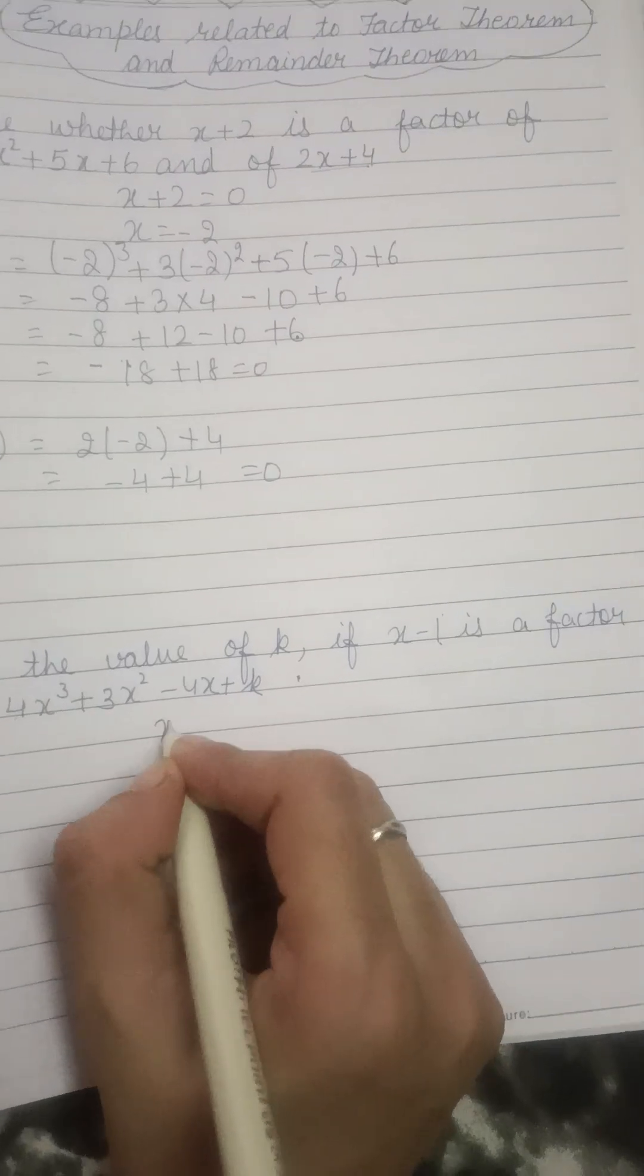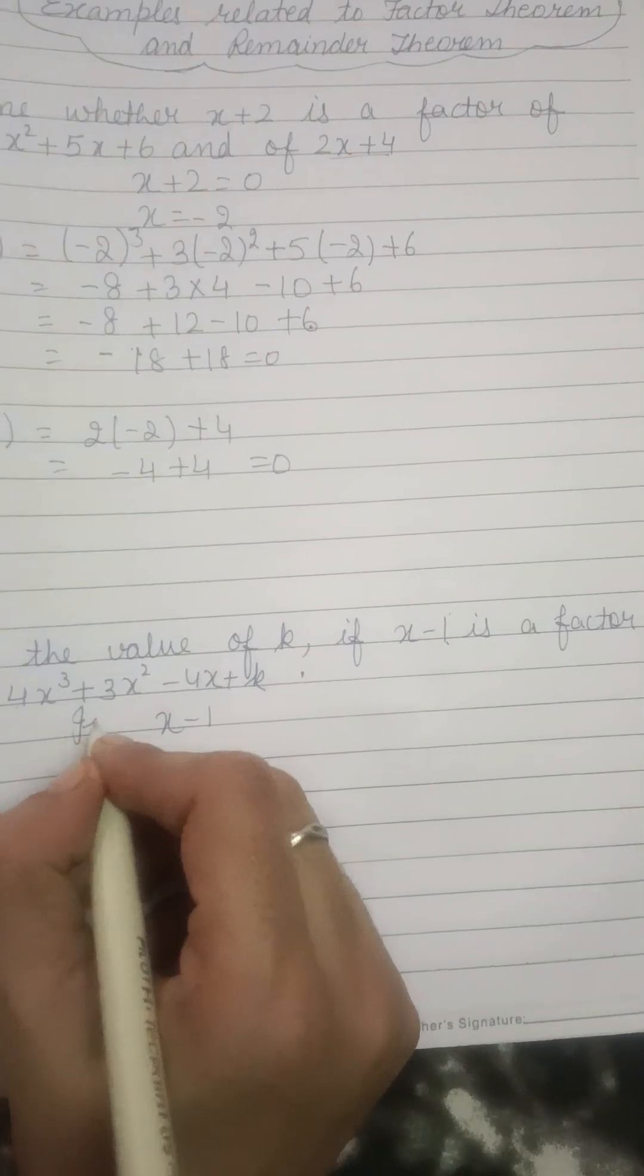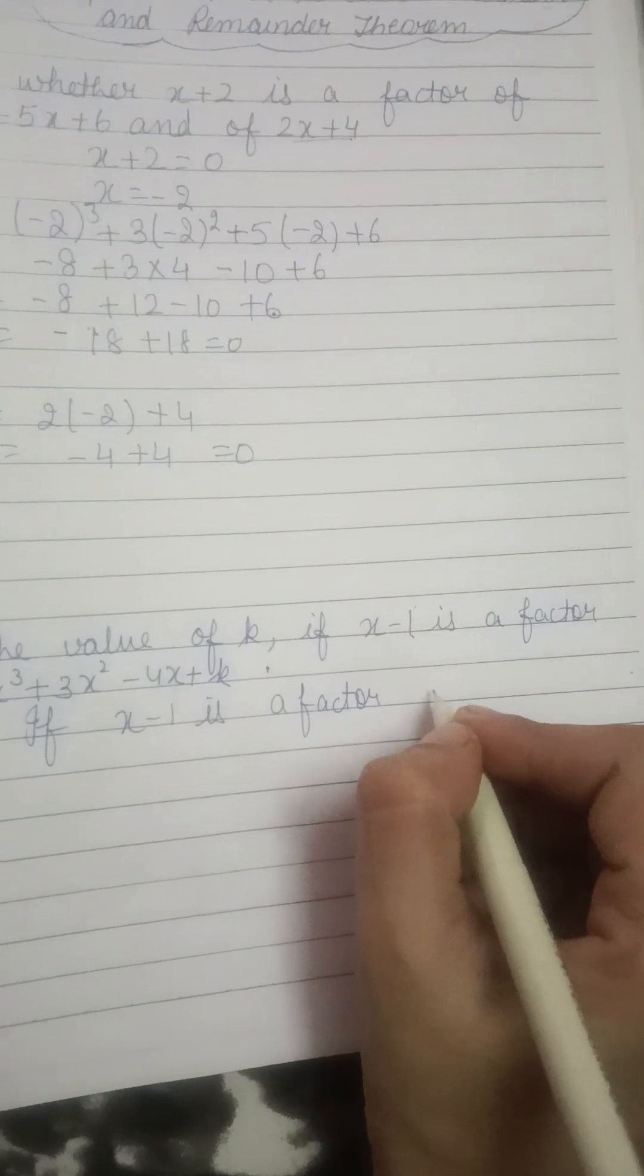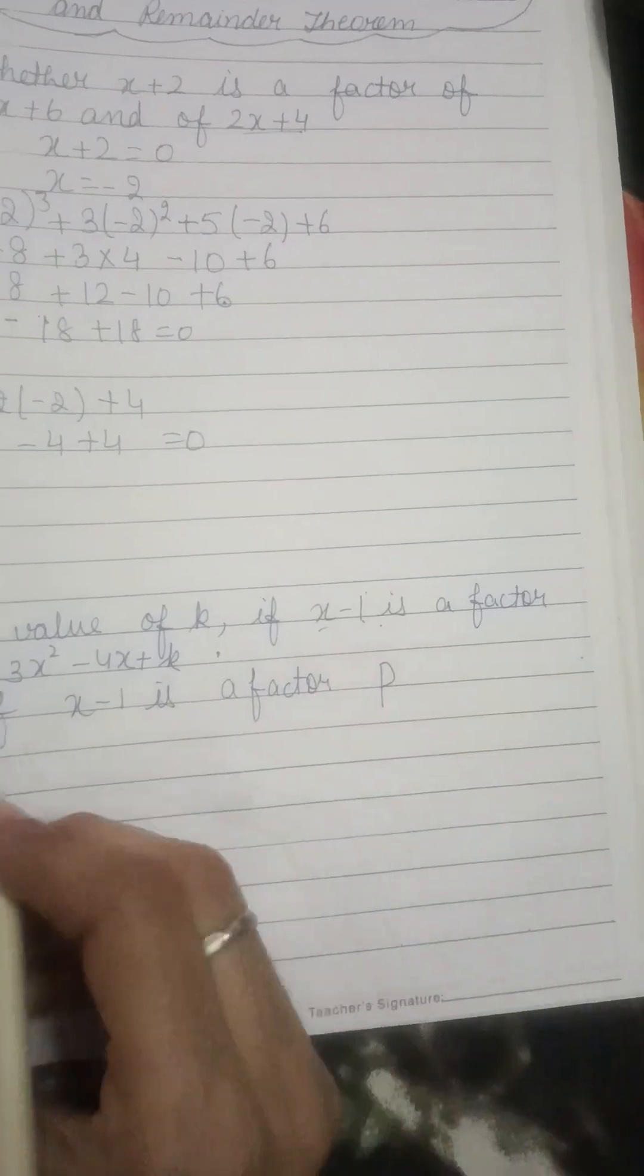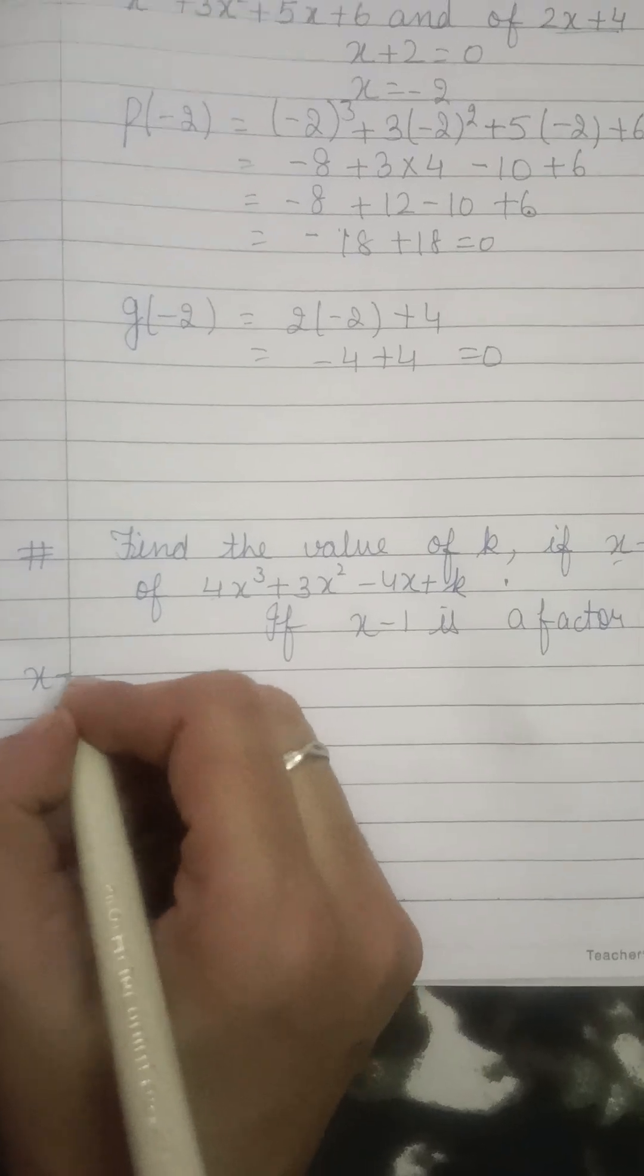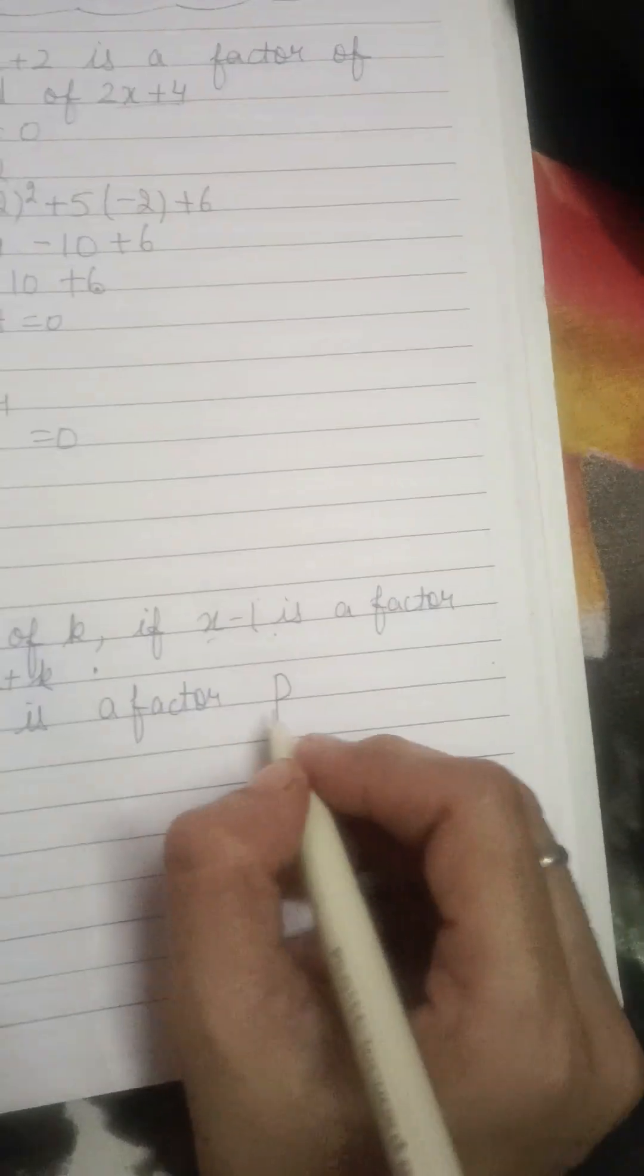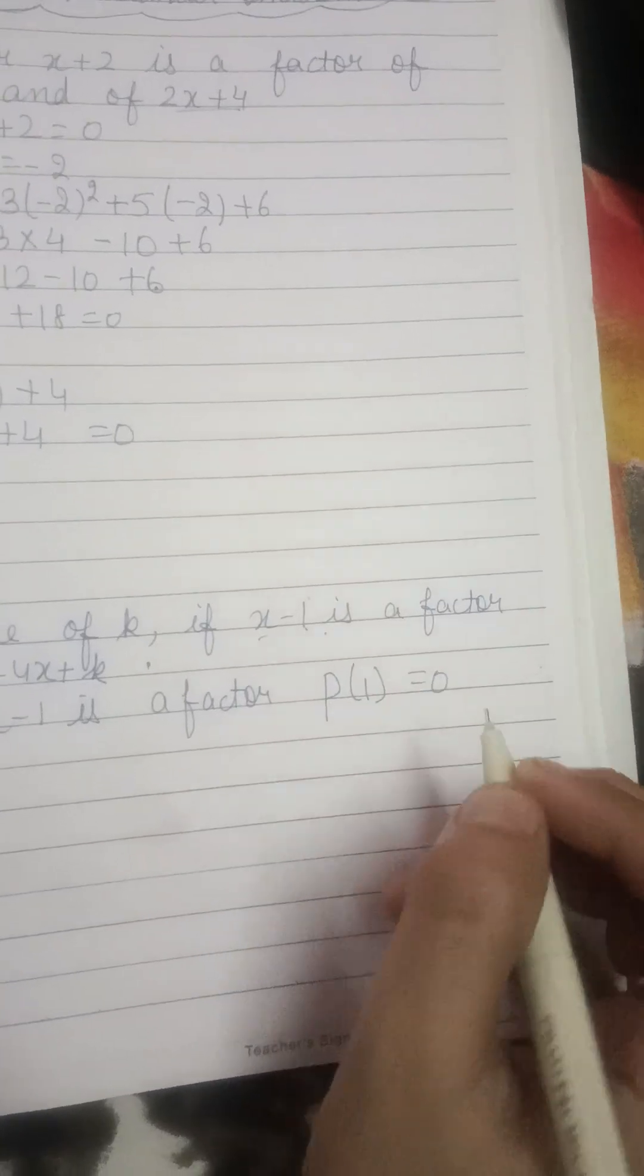अगर x minus 1, if x minus 1 is the factor, then that means p of x minus 1 की value क्या होती है? x minus 1 is equal to 0. That means x की value क्या होगी 1. That means p of 1 will be 0.